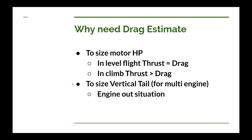Another reason you might need to know the drag — you would not need this for a conventional single-motor airplane — but if you're going to have multi-engines mounted laterally to the left and right of the center line, you'll need to know the thrust of those engines for an engine-out condition. When one engine dies and the other is thrusting, that creates an asymmetric load trying to yaw the airplane toward the failed motor, and you need to counter that with force from your vertical tail. To know how big to make that tail, you need to know how much thrust that engine is going to have, and so you need to know what the drag is.